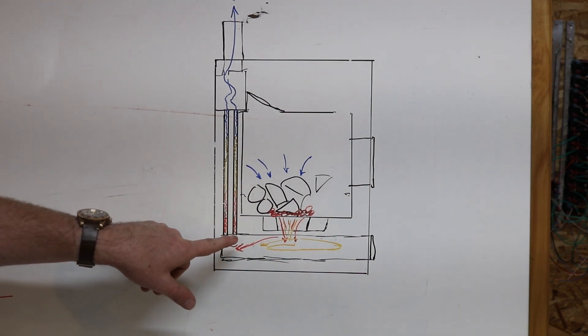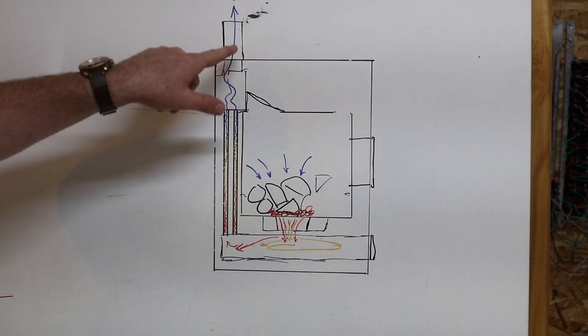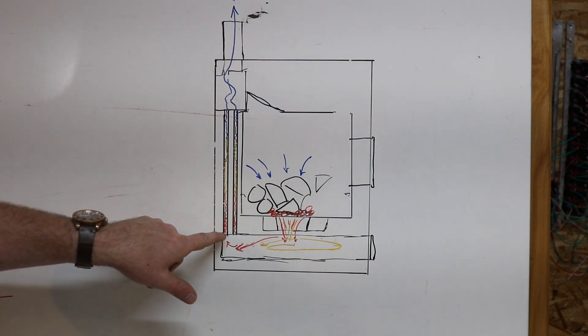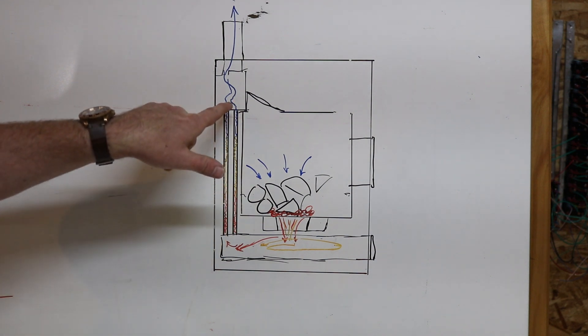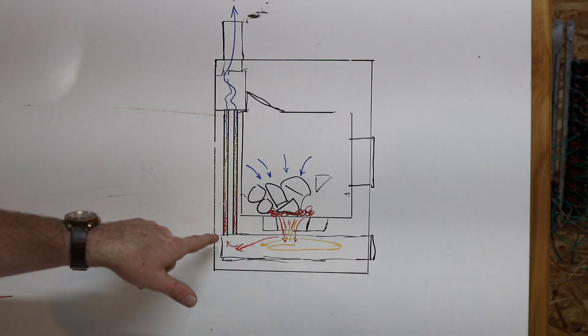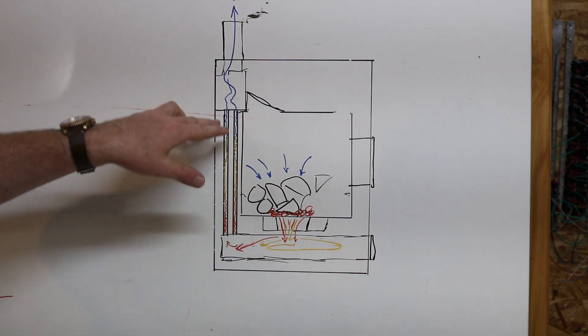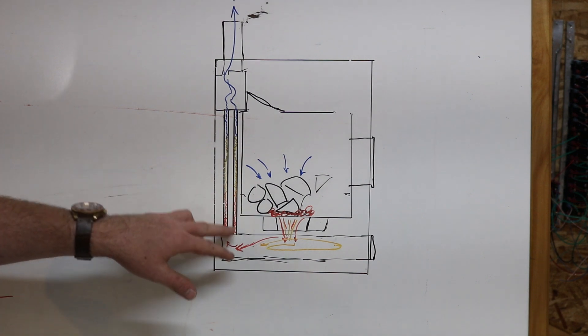So then it has to get from this bottom chamber up here to the chimney and there's water jacket in between. So there are exhaust tubes going through the water jacket and that's where the next heat transfer happens. This is probably the most drastic temperature change from here to here.